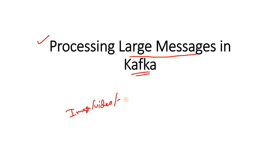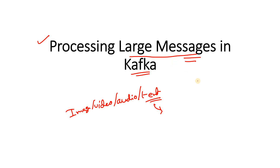Suppose you are working with image data, video data, or audio data in real time, or for example a large text file you are processing for sentiment analysis, or some chatbot-related use case where a large volume of text data the Kafka producer is producing and the consumer needs to process. In Kafka there is a restriction that you can publish a maximum message size at a single shot — for example the configuration can be 1 MB.